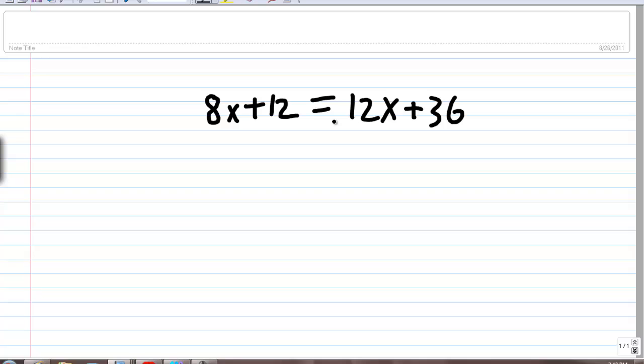This case is where we have 8x plus 12 is going to be equal to 12x plus 36. As you see, this time we have x on both sides of the equation. Now, our rules still apply. We still want to isolate x on one side of the equals, and we also want to get x all by itself equal to some value on the other side.